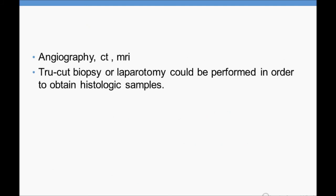Chromogranin A is a sensitive test for glucagonoma — remember this if asked which test is most sensitive. For imaging investigations, you can use angiography combined with CT or MRI for the best results. The gold standard and most accurate test is a biopsy.